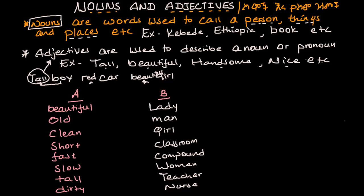Now, before we go further, watch this video carefully. Column A has adjectives and column B has nouns. Try to combine them — match the adjectives with the nouns and form phrases.